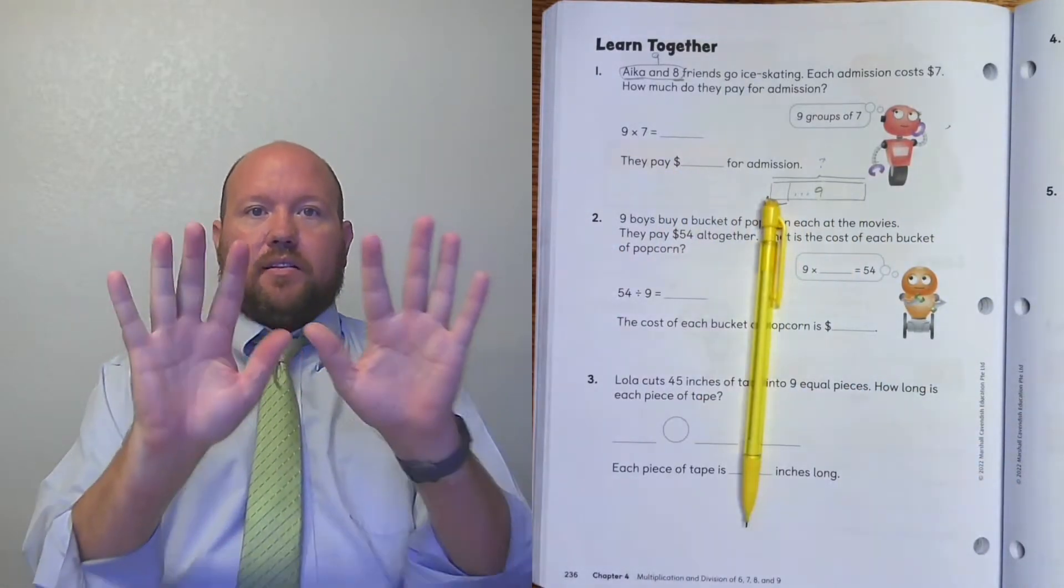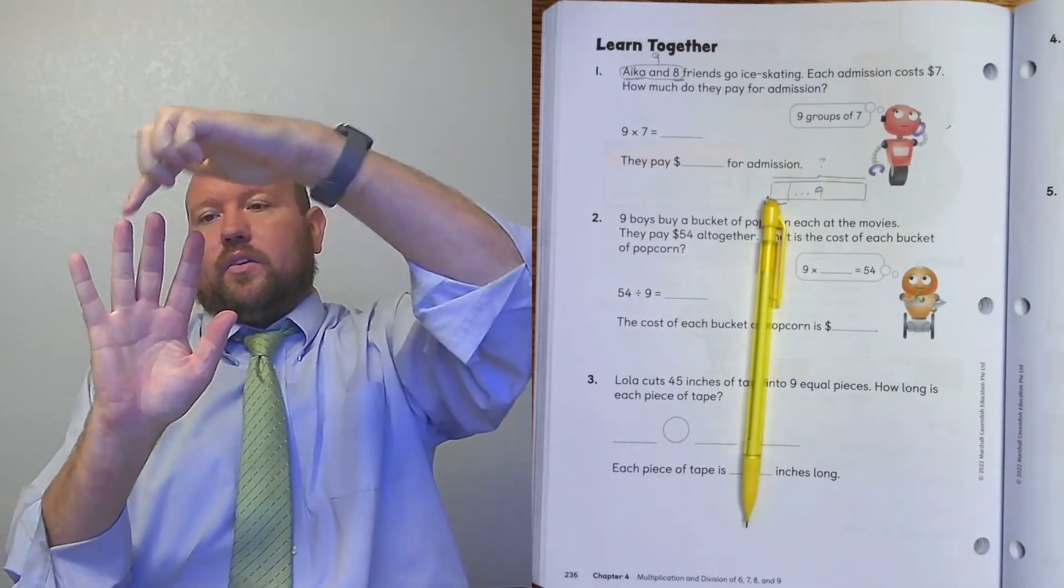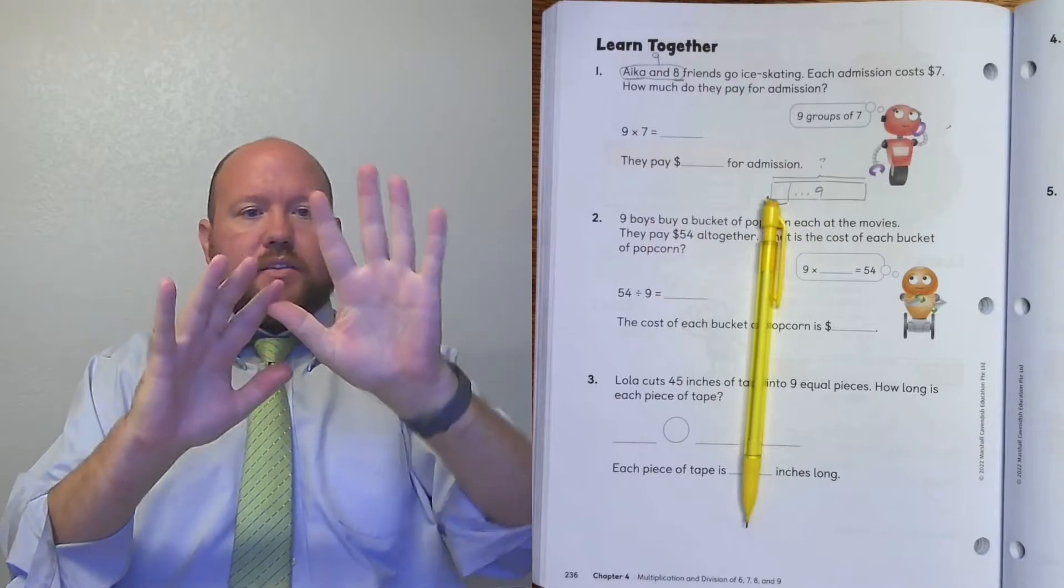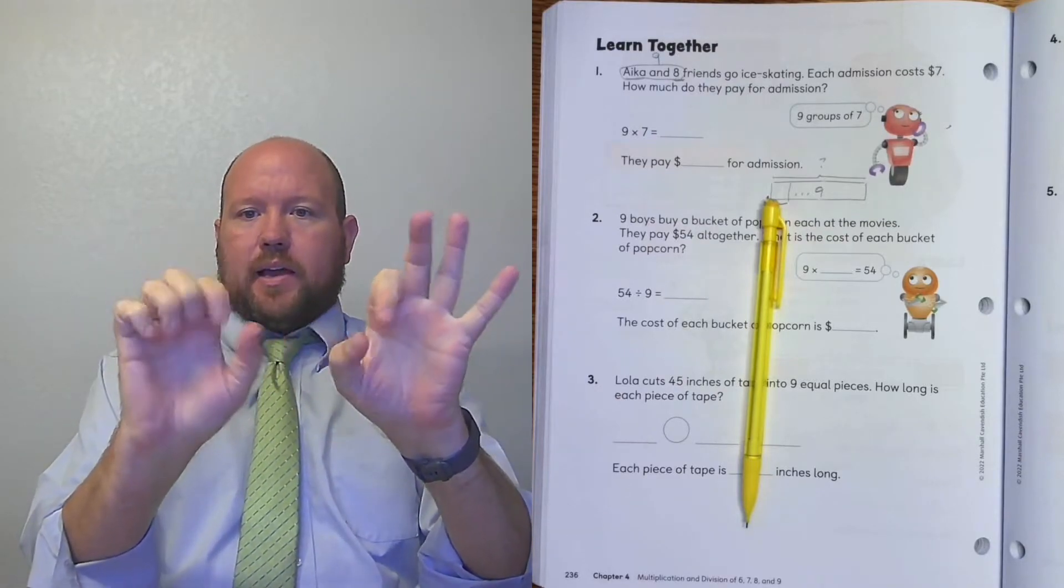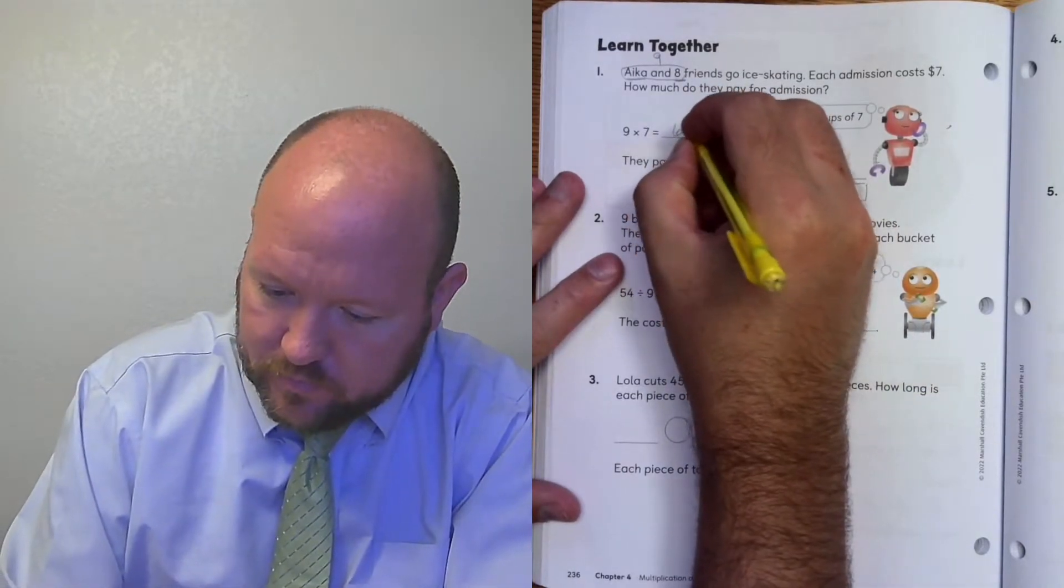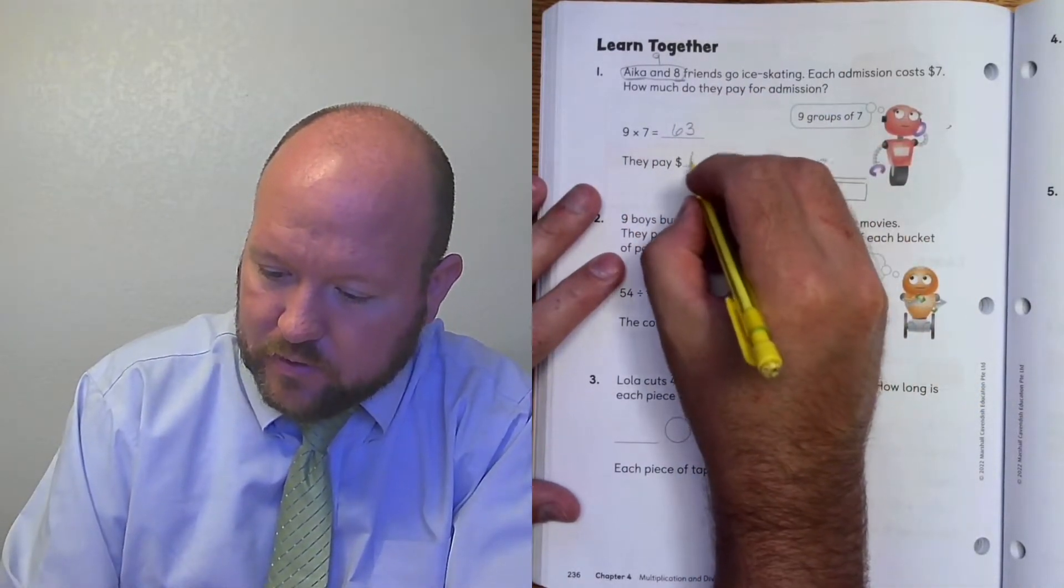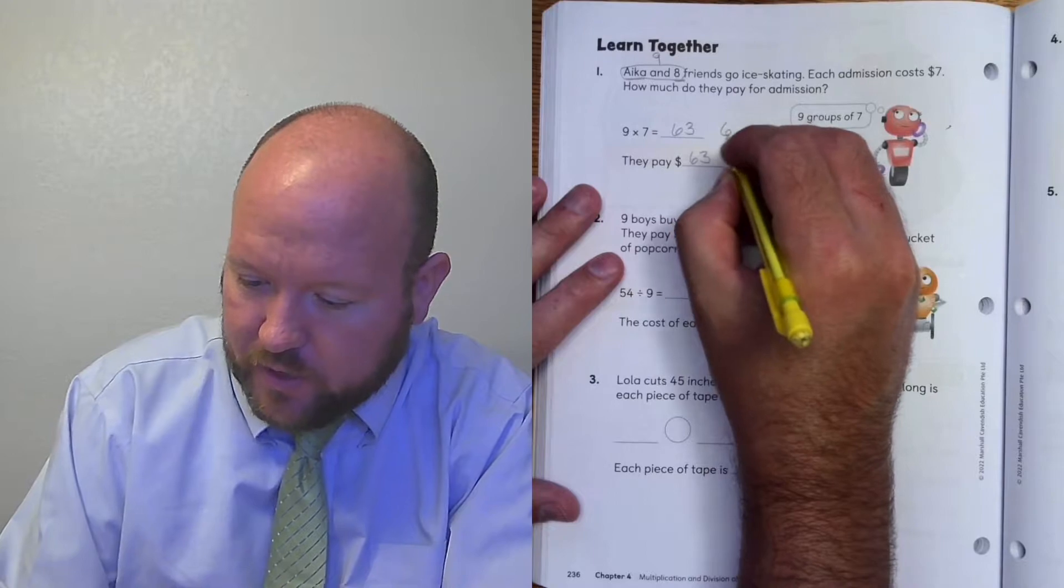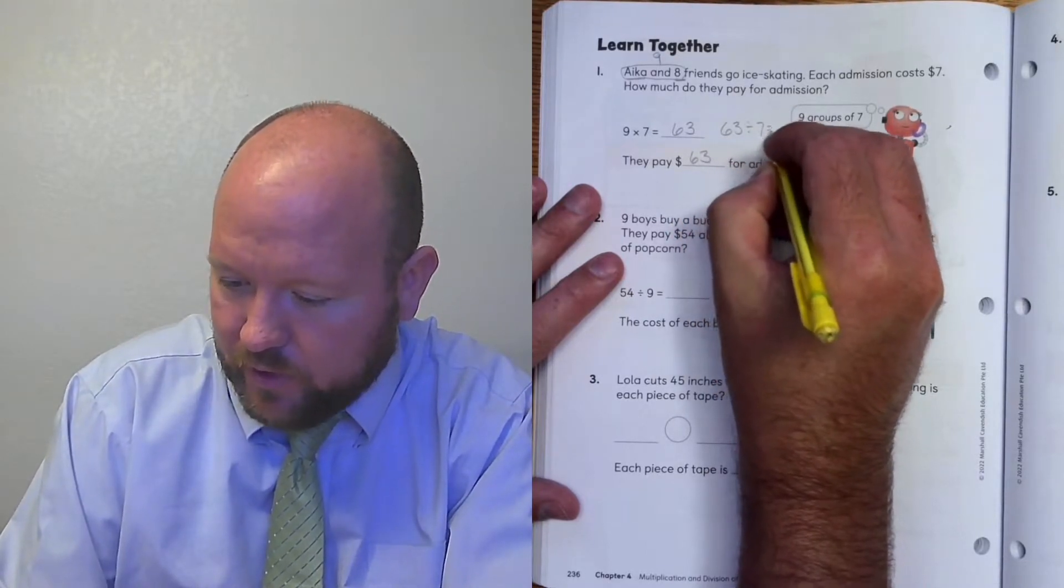So we have to do 9 times 7. 1, 2, 3, 4, 5, 6, 7, 6, 3, 63. So $63. And we know that's true because 63 divided by 7 equals 9.